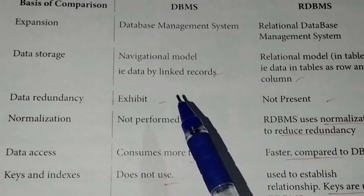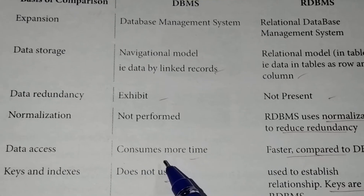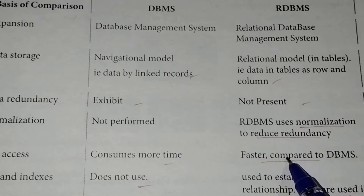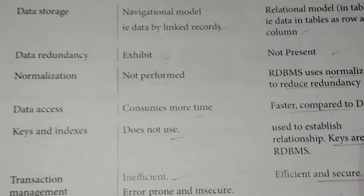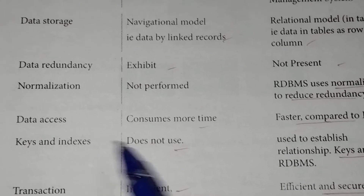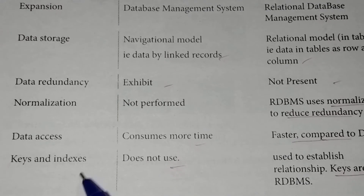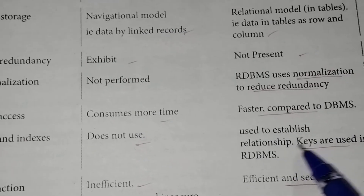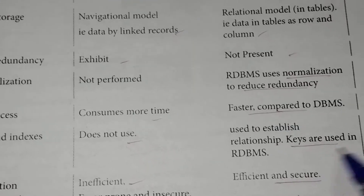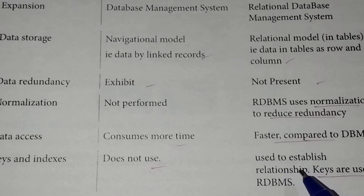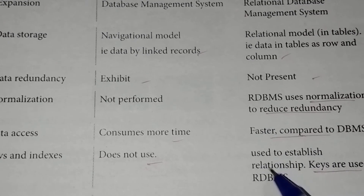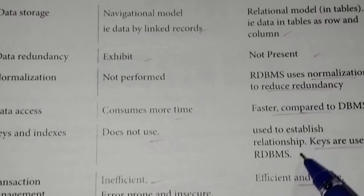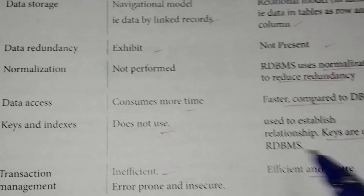Data Access: How do we use DBMS? Keys and Indexes — DBMS does not use keys and indexes to establish relationships, whereas in RDBMS, keys are used to establish and manage relationships.